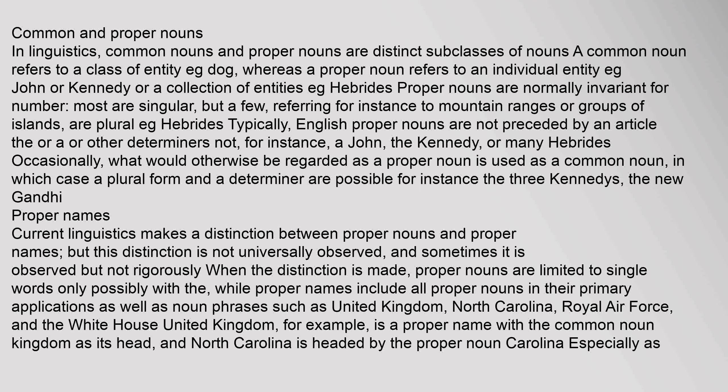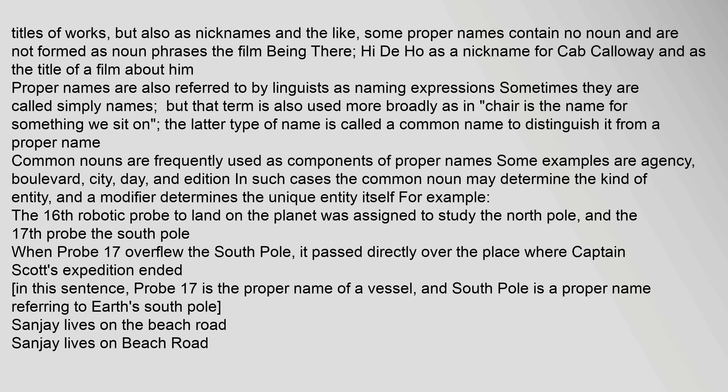Current linguistics makes a distinction between proper nouns and proper names, but this distinction is not universally observed. When the distinction is made, proper nouns are limited to single words, while proper names include all proper nouns in their primary applications as well as noun phrases such as United Kingdom, North Carolina, Royal Air Force, and the White House. United Kingdom, for example, is a proper name with the common noun Kingdom as its head, and North Carolina is headed by the proper noun Carolina. Some proper names contain no noun and are not formed as noun phrases — the film Being There; Hi-de-Ho is a nickname for Cab Calloway. Proper names are also referred to by linguists as naming expressions, or simply names, though that term is also used more broadly, as in 'Chair is the name for something we sit on.'